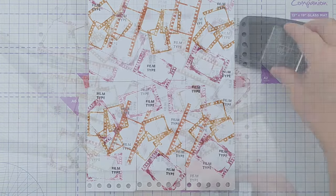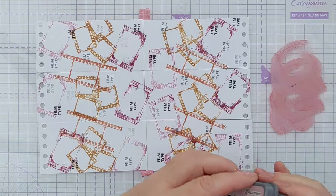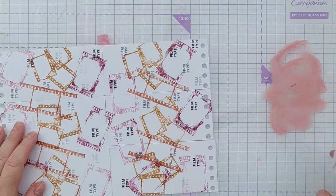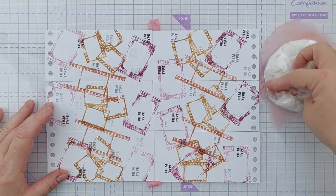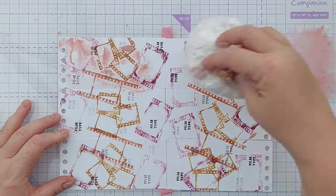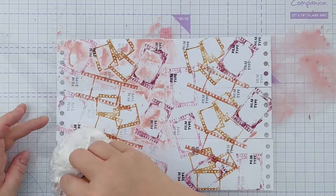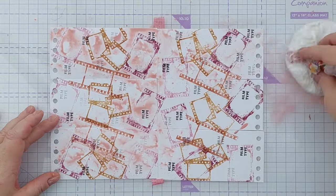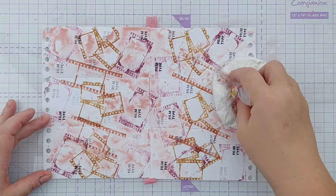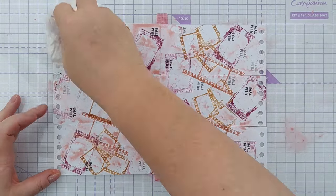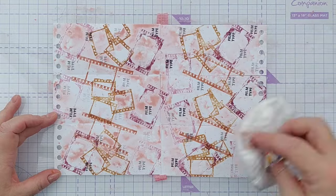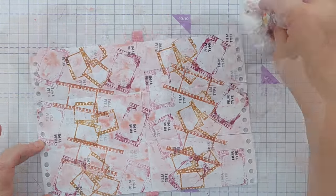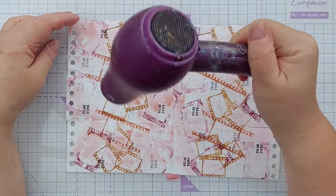Once my archival ink was dry, I decided it was time to do the smushing. So I took Victorian Velvet, which is a very dusky pink, and I always love to use this on this kind of vintagey distressed grungy piece. I think it just works, it's got that feel. So I smushed that on my mat, squirted it with some water to create a paint, and then used my smusher to smush it all over. And when I was happy, I dried it with my hairdryer.